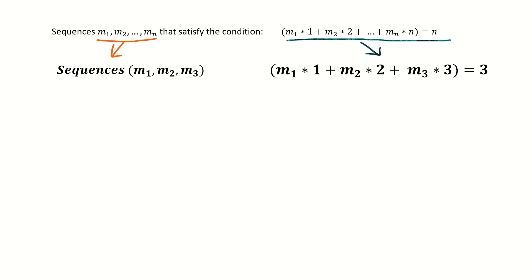One possible sequence of m1, m2, m3 that would satisfy the condition would be m1 equals 1, m2 equals 1, and m3 equals 0. Why does this sequence satisfy the condition? Because 1 times 1 plus 1 times 2 plus 0 times 3 equals 1 plus 2 which equals 3. You can see how this matches up to the condition below.